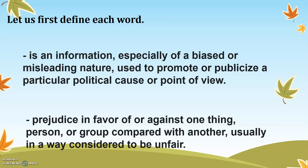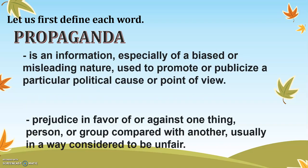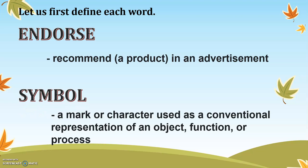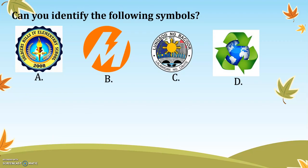Now let's define each word. Propaganda is information, especially of a biased or misleading nature, used to promote or publicize a particular political cause or point of view. Bias means prejudice in favor of or against one thing, person, or group compared with another, usually in a way considered unfair. Endorse means to recommend a product in an advertisement. A symbol is a mark or character used as a conventional representation of an object, function, or process.